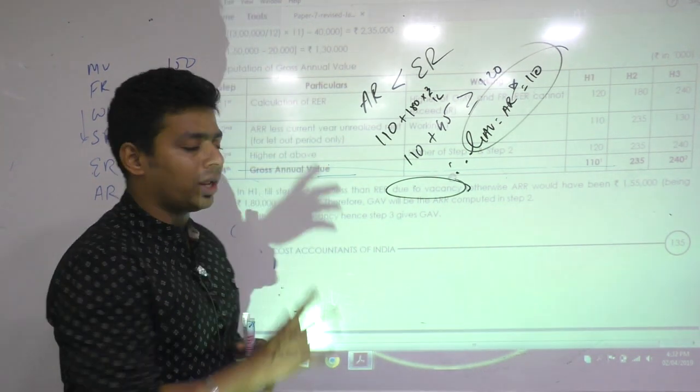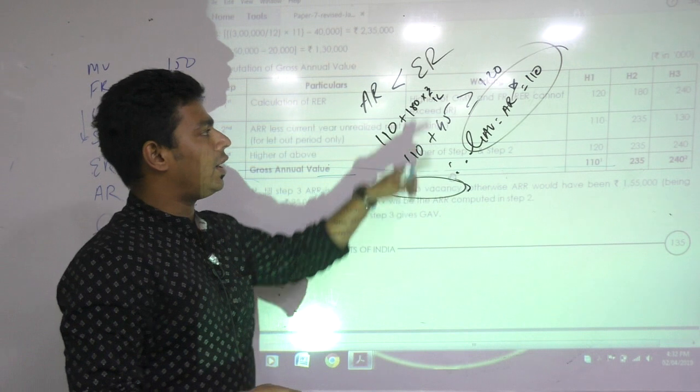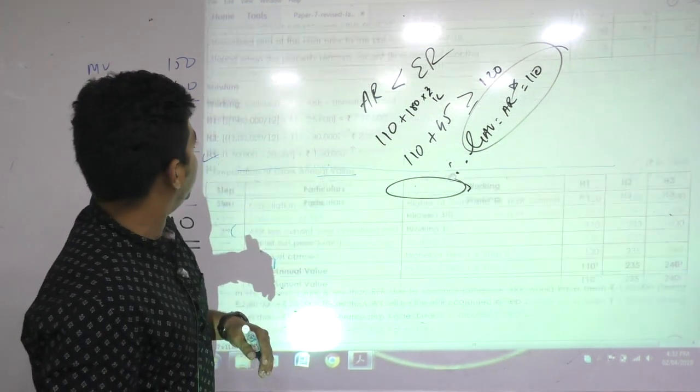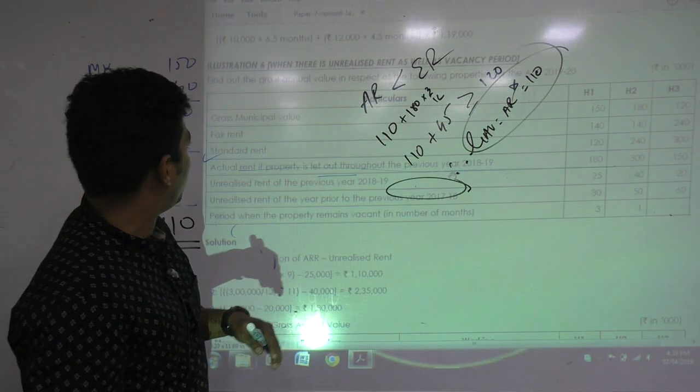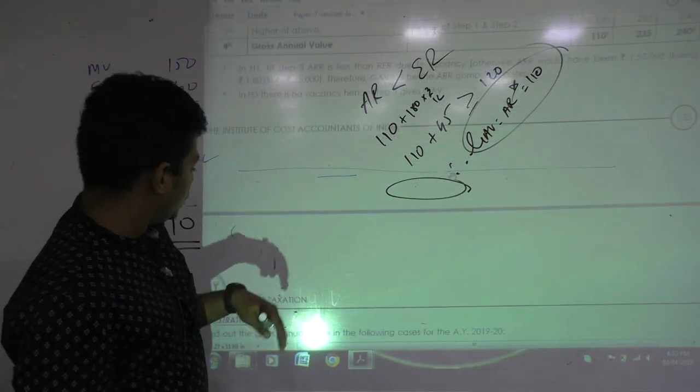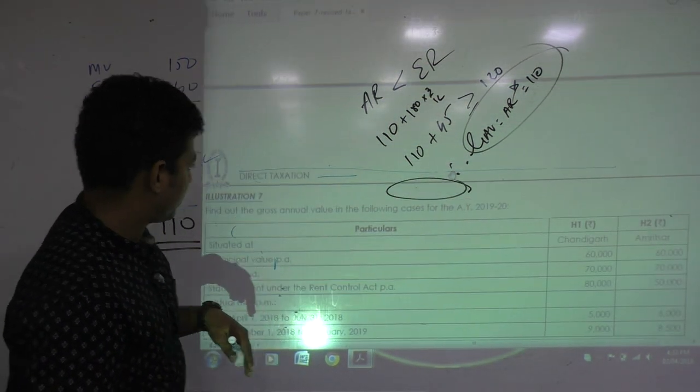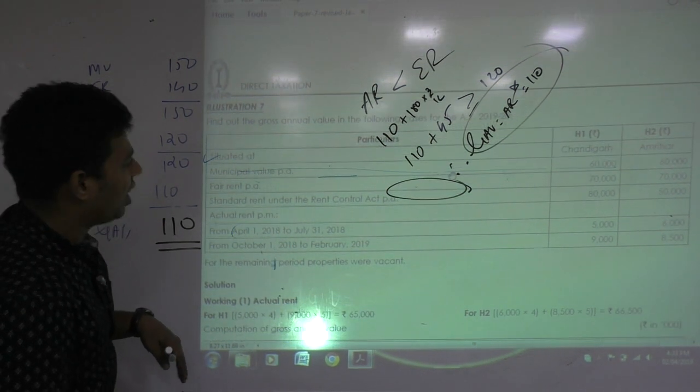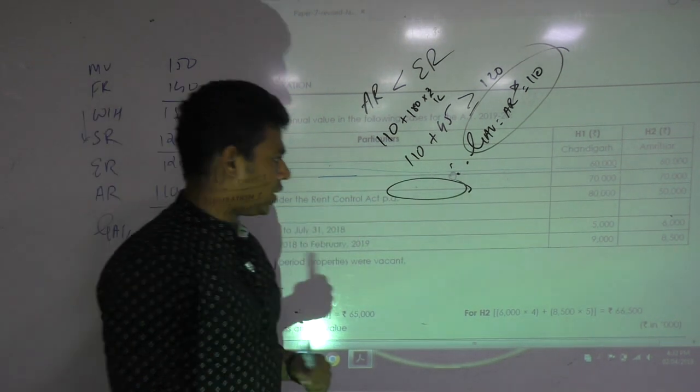You need to practice this. What is the note? In H1, till step 3, AR is less than expected rent due to vacancy. Otherwise AR would have been 1,55,000 - 1,10,000 actual rent and 45,000 vacancy rent. If there was no vacancy, my AR should be 155, which is much higher than your expected rent. Therefore GE will be taken as actual rent. This question 3, 4, 5, and 6 is your homework. Illustration 7 also you can do - it's a question of vacancy only. So 5, 6, 7 is your homework. Then we will continue tomorrow.